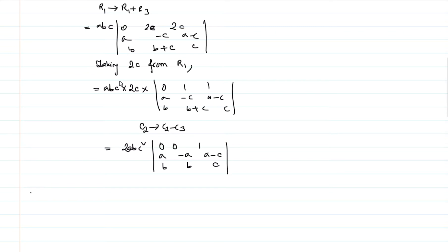So expanding by row 1, we'll be getting 2abc² times 1 times ab plus ab. So it is 2abc² times 2ab, that is equal to 4a²b²c², which equals RHS proved. I hope you have no doubt in this. This is the shortest method that I have found to solve this question.